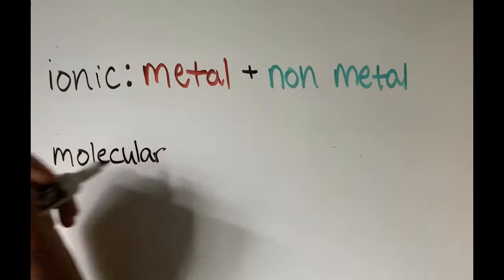If you remember from the ionic compounds video, ionic compounds are usually made up of one metal and one nonmetal. Molecular compounds on the other hand are usually just made up of nonmetals. Many molecular compounds are also binary.